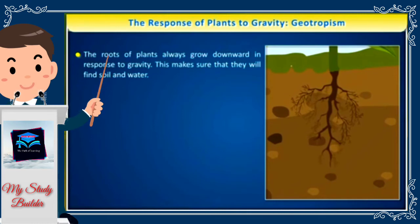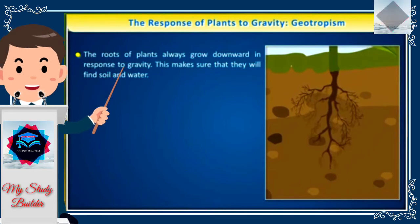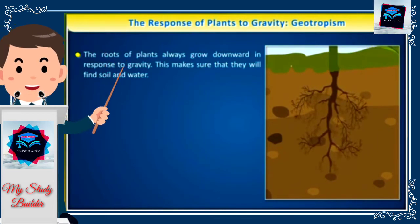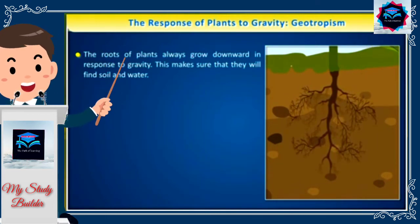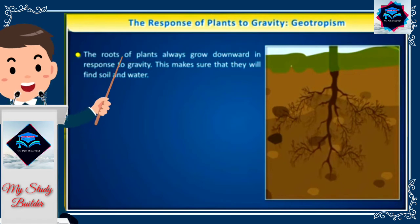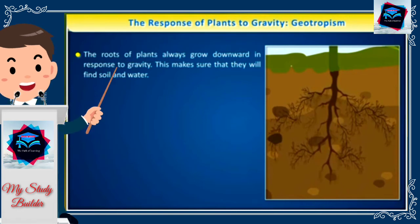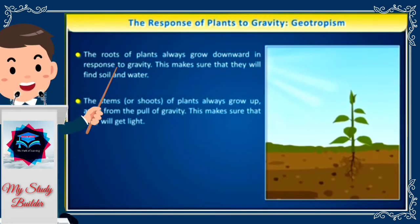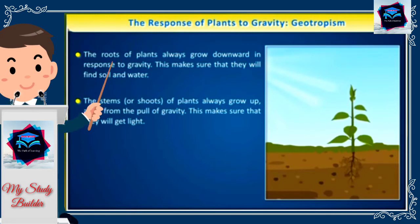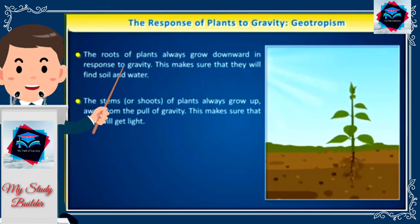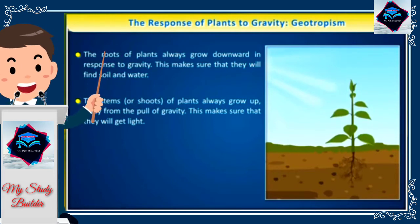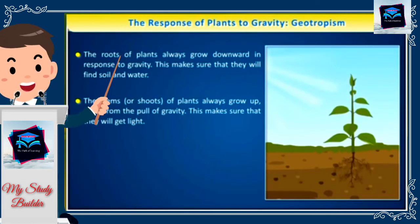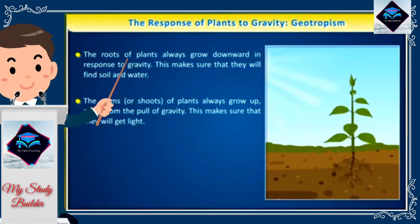The roots of plants always grow downward in response to gravity, which makes sure that they will find soil and water. The stems or shoots of plants always grow upward, away from the pull of gravity, which makes sure that they will get light.